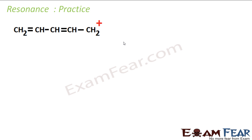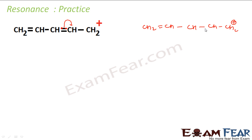Let's do some practice. Given one structure, find the resonating structure. In this case, we can move electrons. If you break a pi bond and move the two electrons to the adjacent carbon, that carbon gets a negative charge and the carbon that lost the electrons gets a positive charge. So a positive charge and negative charge combine to form a new bond, giving you CH2 double bond CH with a new arrangement — that is one resonating structure.